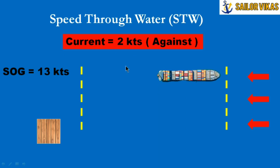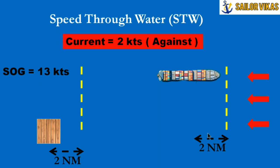The speed over ground becomes 13 knots because of the 2 knots against current. But what about speed through water? Speed through water is with reference to the water — the reference point is the wooden plank. The wooden plank has moved behind by 2 nautical miles, and the ship has also traveled 2 nautical miles less. So the distance between the plank and the ship is still 15 nautical miles, giving a speed through water of 15 knots — same as when there was no current.